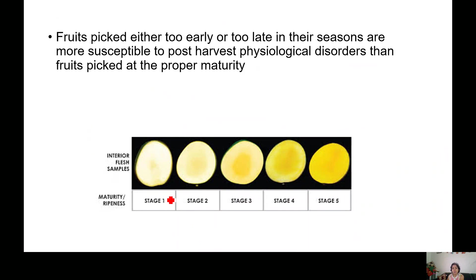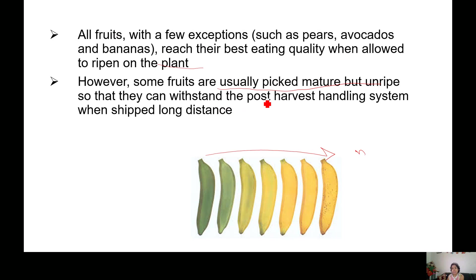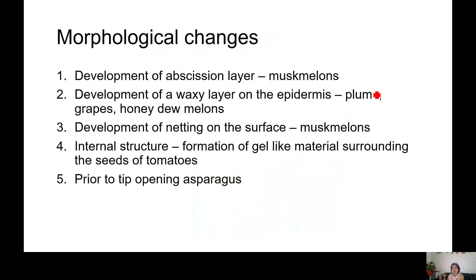In the case of mango, from maturity stage one through stage five, the fruit becomes more sweet and sugar-containing. Green banana to over-ripened banana also becomes sweeter. All fruits, with a few exceptions such as pears, avocado, and banana, reach their best eating quality when allowed to ripen on the plant. However, some fruits are usually picked mature but unripe so that they can withstand the post-harvest handling system, and there are many morphological changes that take place.